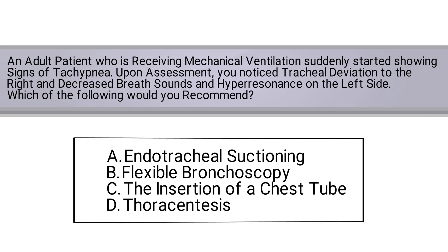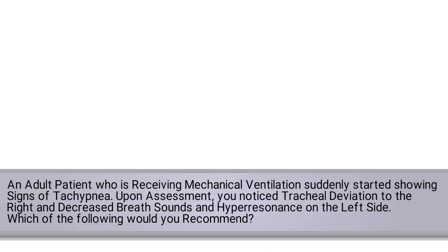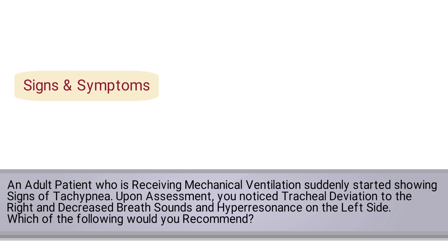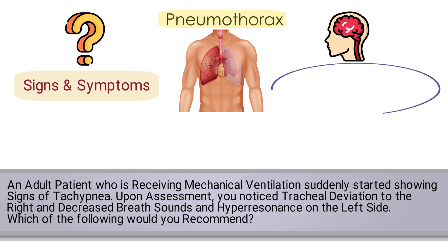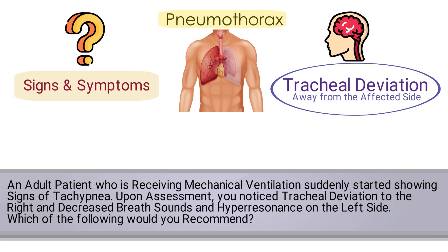For this question, you needed to be able to interpret the signs and symptoms given. By doing so, you could easily determine that all of the signs are consistent with a pneumothorax. Be sure to remember that patients with a pneumothorax will typically show signs of tracheal deviation away from the affected side.